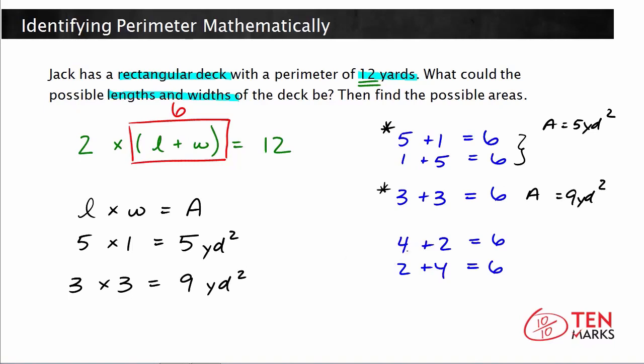And lastly, what if we had the last combination here, 4 and 2? So you multiply 4 times 2. 4 times 2 is 8. So the area of this deck would be 8 yards squared.